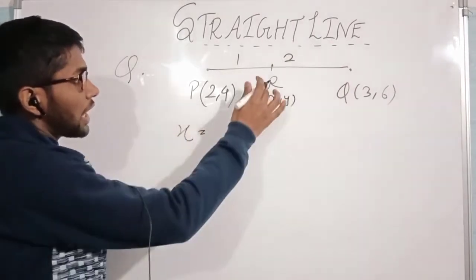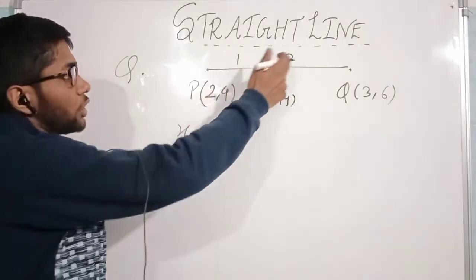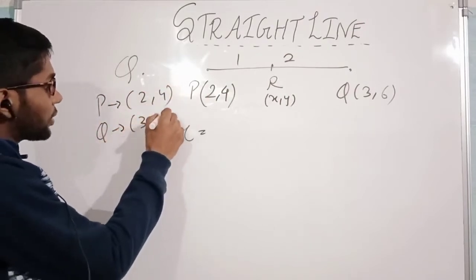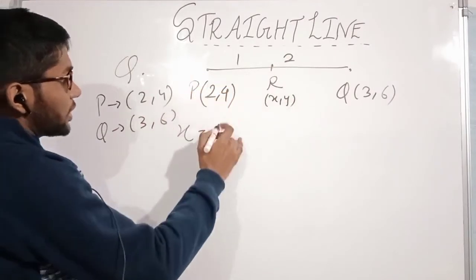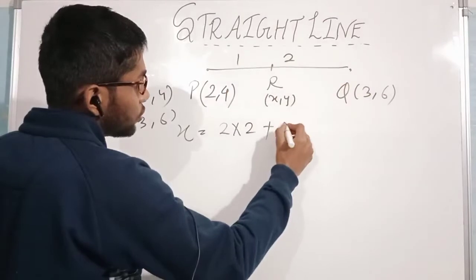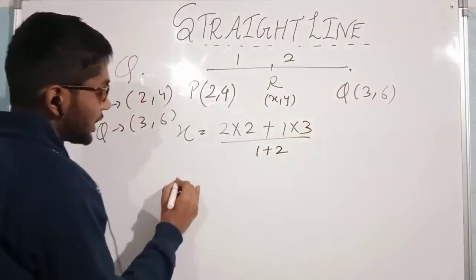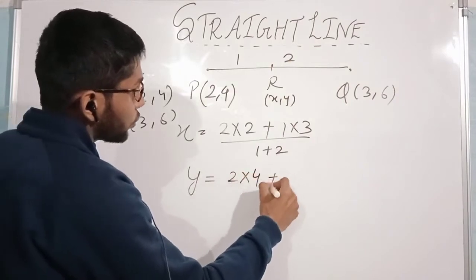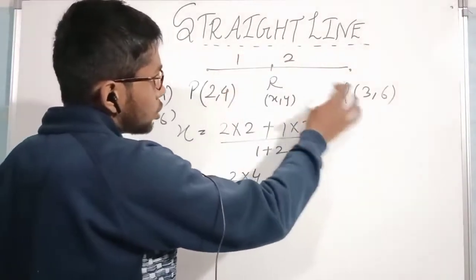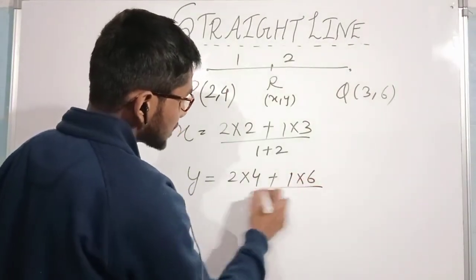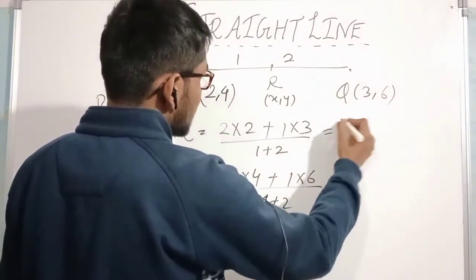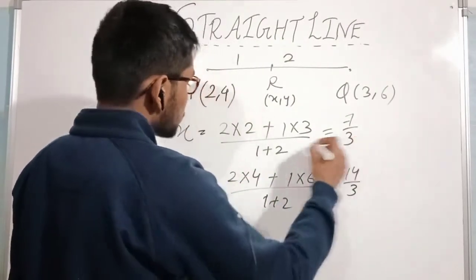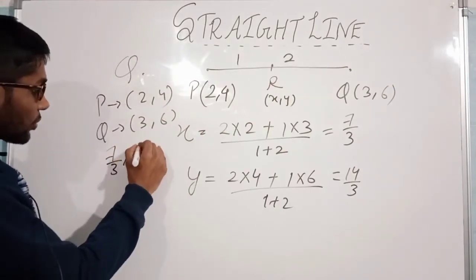Applying the section formula: x-coordinate of R = 2 into x-coordinate of P, that is 2 into 2, plus 1 into x-coordinate of Q, that is 1 into 3, divided by 1 plus 2. For the y-coordinate: 2 into 4 plus 1 into 6, divided by 1 plus 2. So x = (4+3)/3 = 7/3, and y = (8+6)/3 = 14/3. Therefore coordinates of R are (7/3, 14/3).